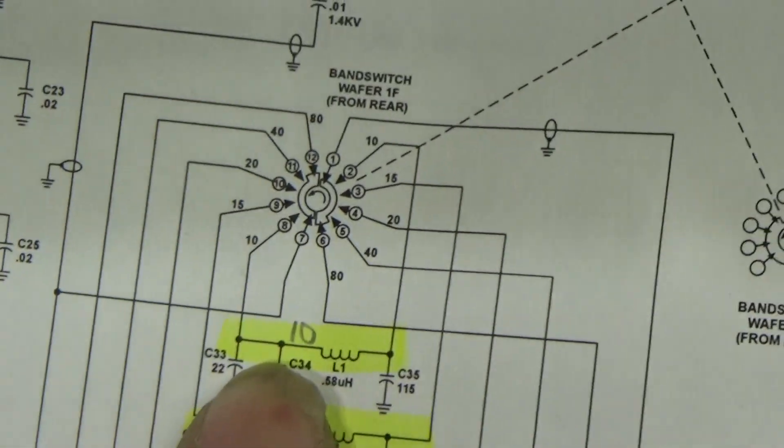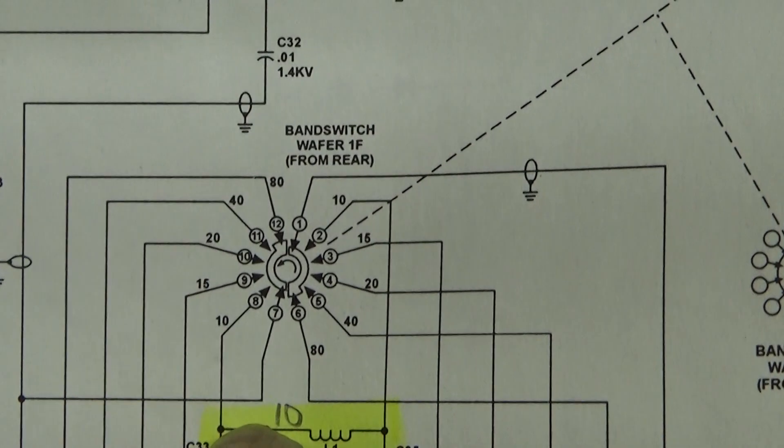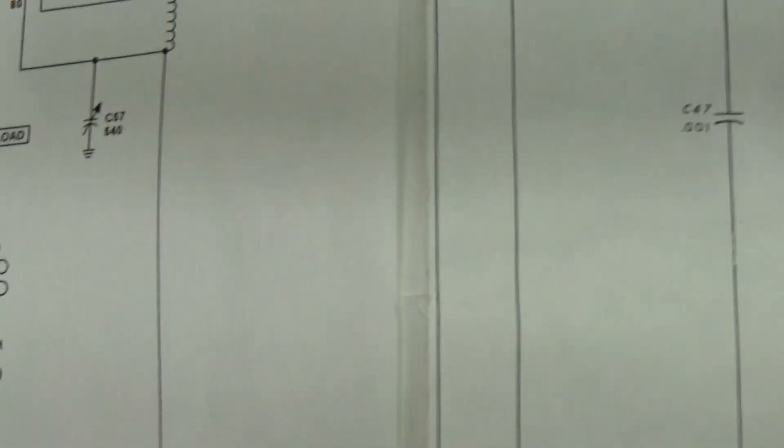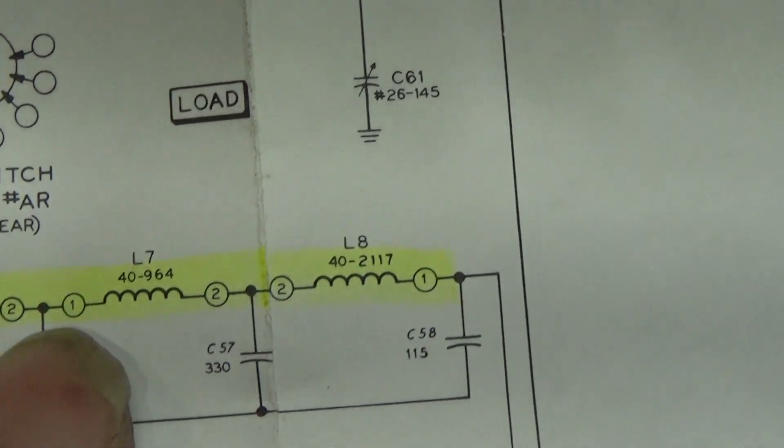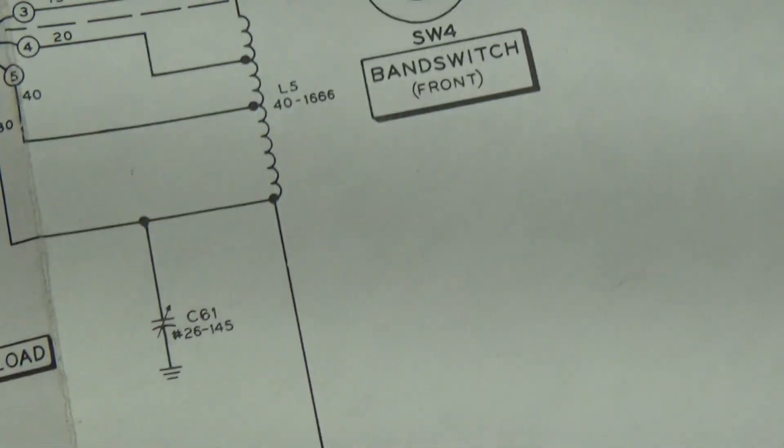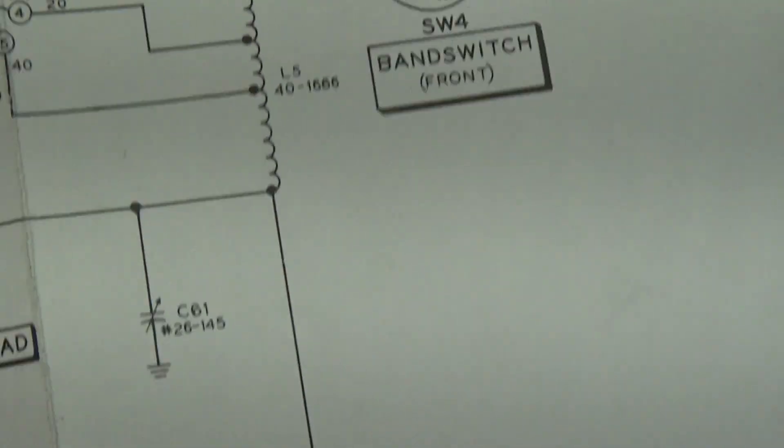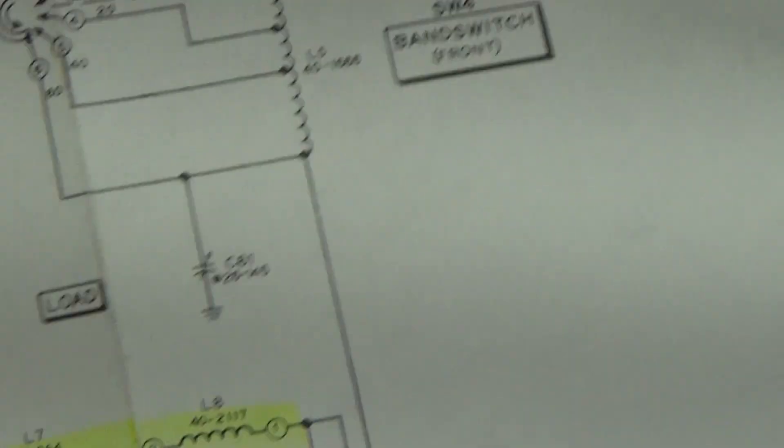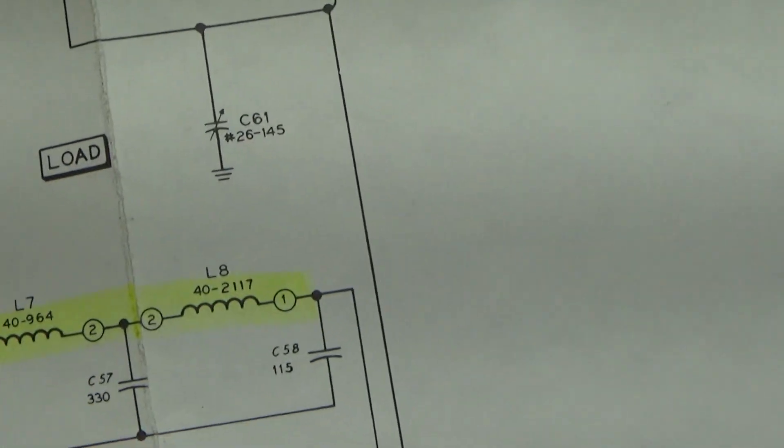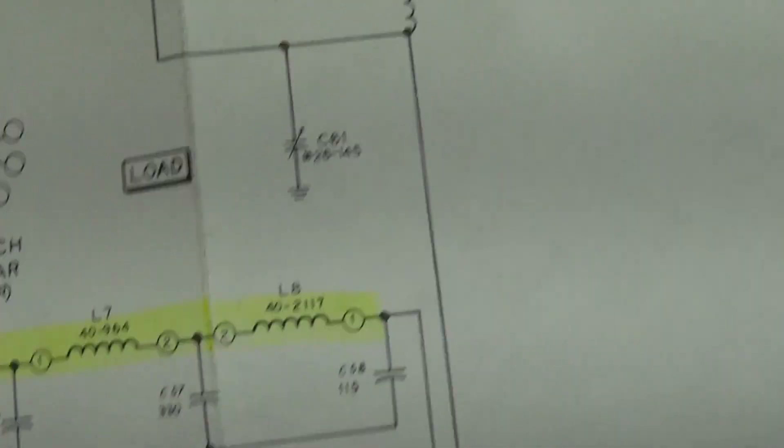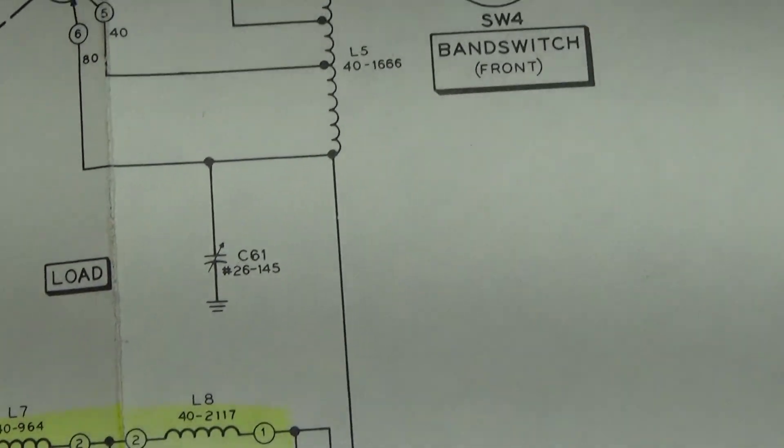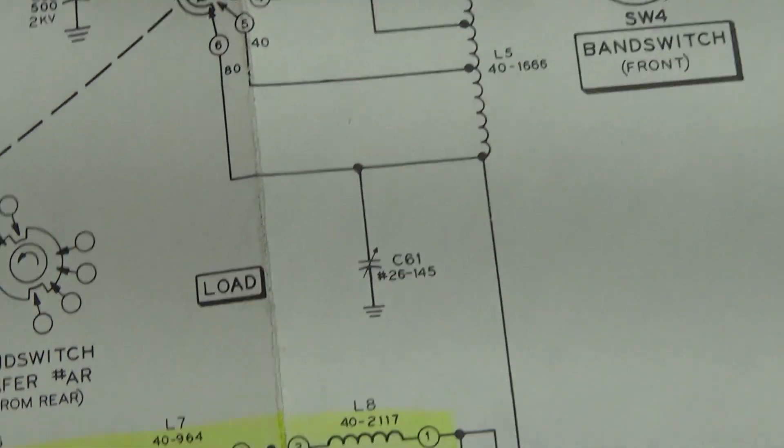...cracked down and Uncle Charlie said no, no, no. So originally they put a block in some of the later SB220s. But you know, you can take the trap or block out. So then they took 15 meters, I mean 10 meters, completely out of the later ones and HL-2200. No...